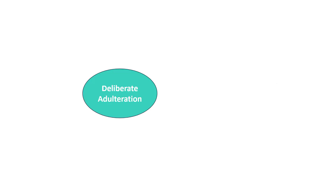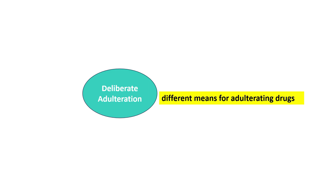Now we will talk about deliberate adulteration. Intentionally adulterating the drug by human beings for profit — the main motivation is usually the cost of the drug. There are six different means of adulteration in deliberate adulteration. Number one: replacement of exhausted drug, where the active principle or volatile oil is removed. Number two: similar inferior drug. Number three: artificially manufactured substituents.